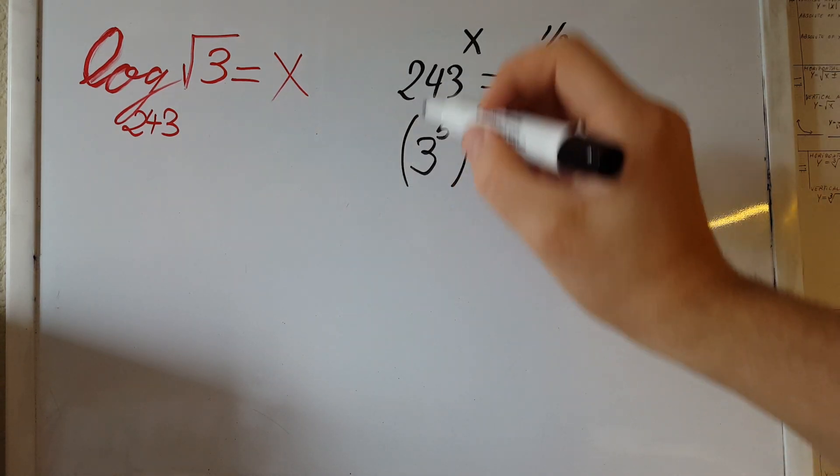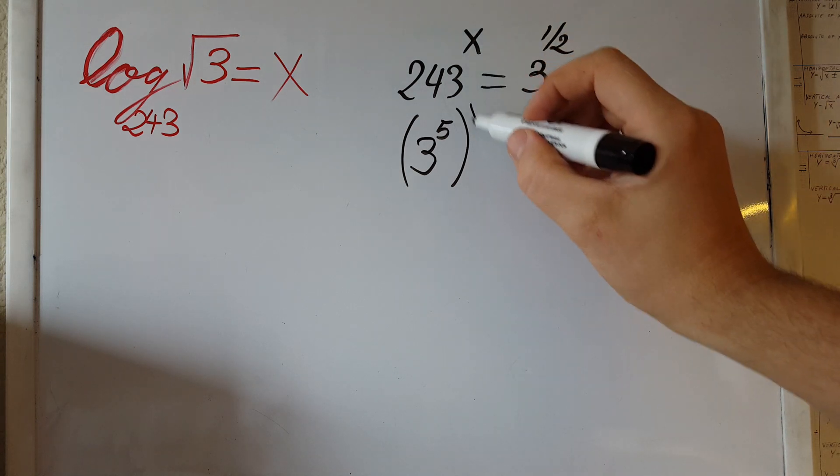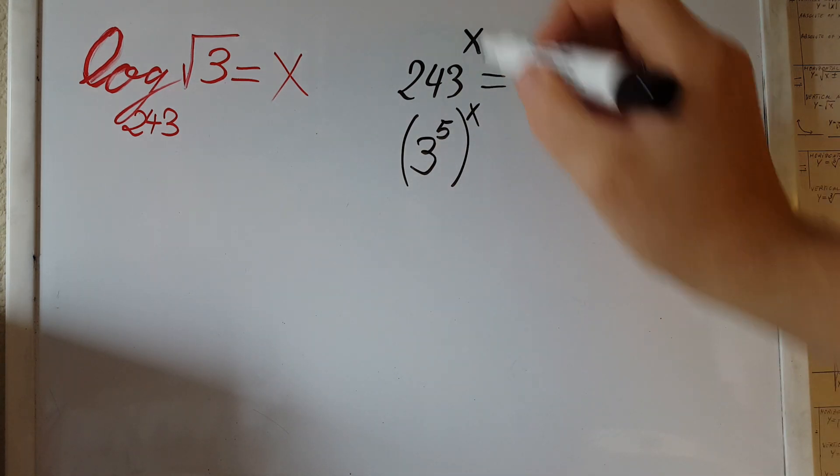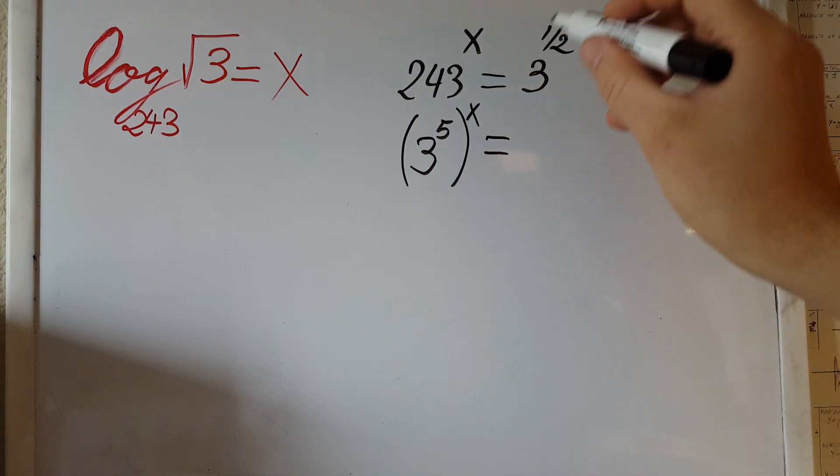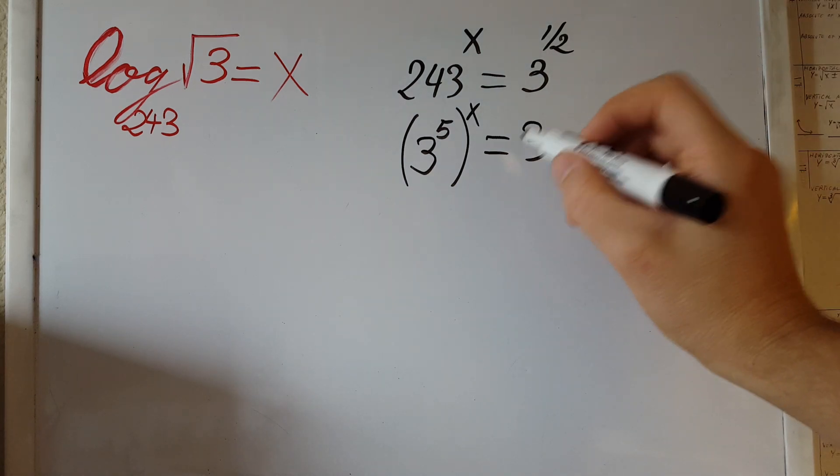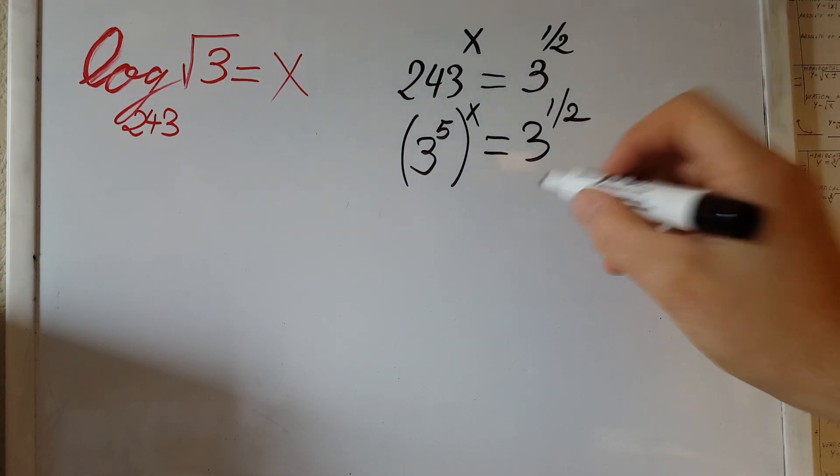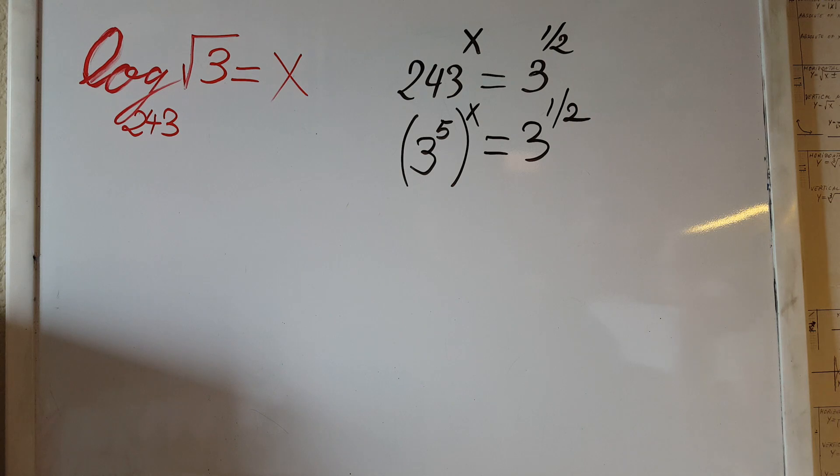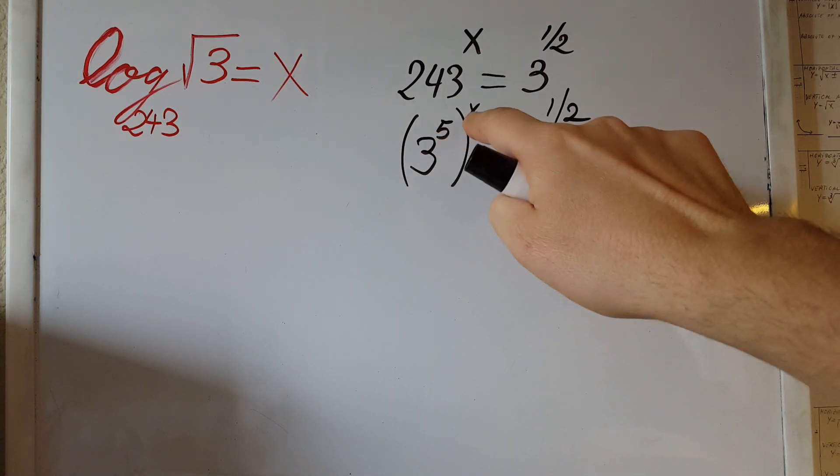We can rewrite this way with our x from there equals - this will just stay the way it is - 3 to the power of one half.